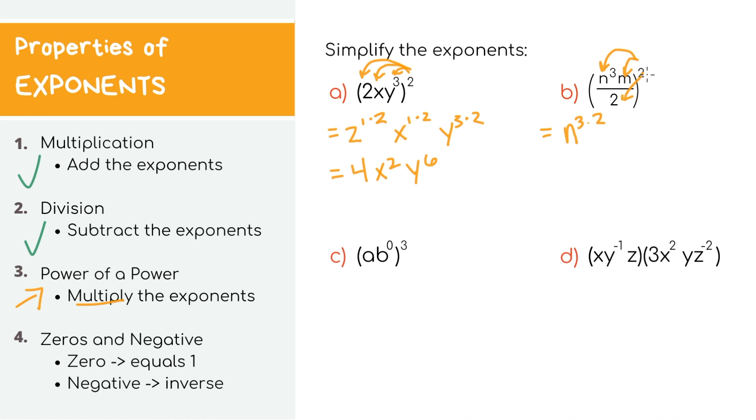Continuing to distribute the 2, we'll get m to the power of 2. And we also need to multiply it to the denominator of the fraction as well, so we have to raise the 2 in the bottom to the power of 2. Simplifying, we'll get n⁶ times m² over 2², which is 4.